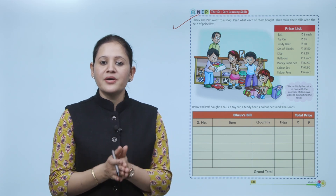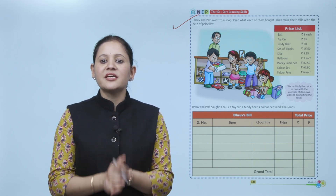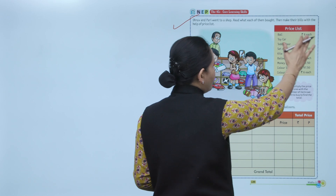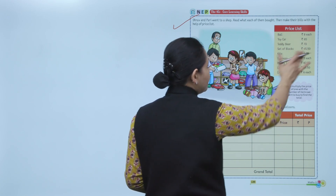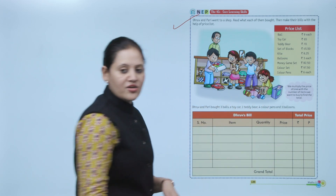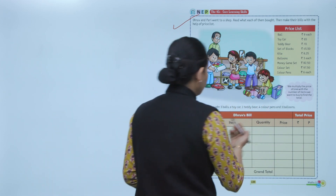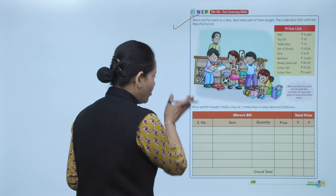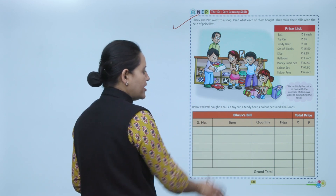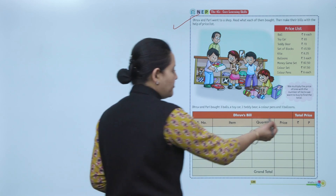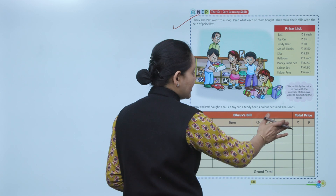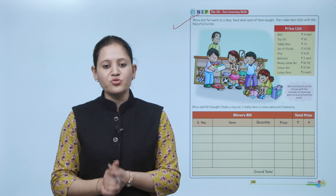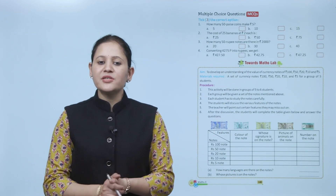Next is the Four C's core learning skills. Dhruv and Pari went to the shop. Read what each of them wants, then make their bills using the price list. The price list shows: ball 8 rupees each, toy car 65 rupees, teddy bear 70 rupees, and prices for other items. Write the serial number, item, quantity, price per item, and total price multiplied by quantity, then find the grand total. Do this activity by yourself.